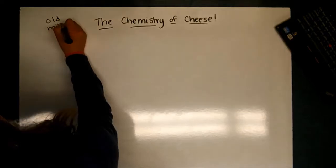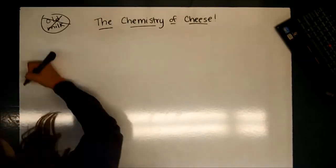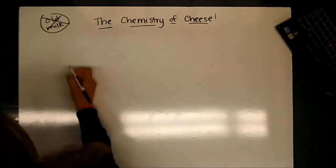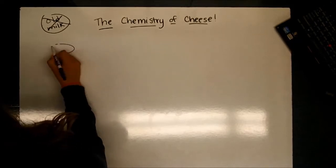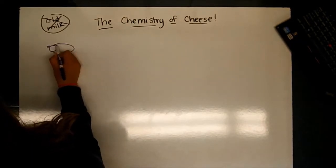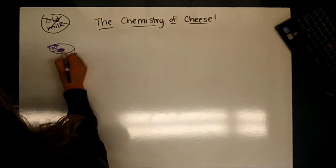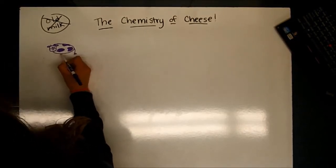First of all, the common misconception that cheese is old milk is wrong. The process is much more complicated than you may think. The first step in creating cheese starts at the milk-producing organism. For this video, we'll stick to a cow, but it could be a goat, a llama, or your own personal favorite milk-producing organism.